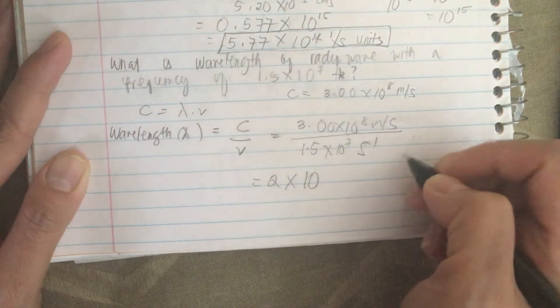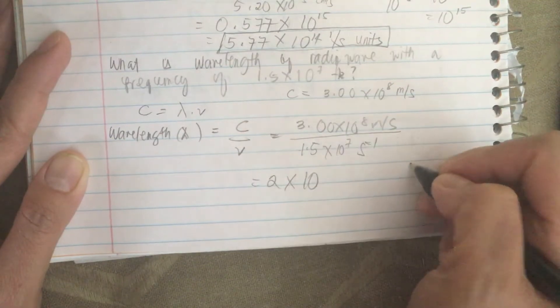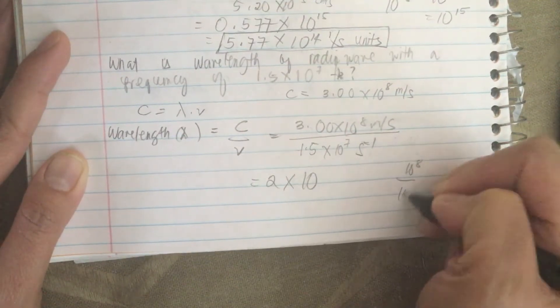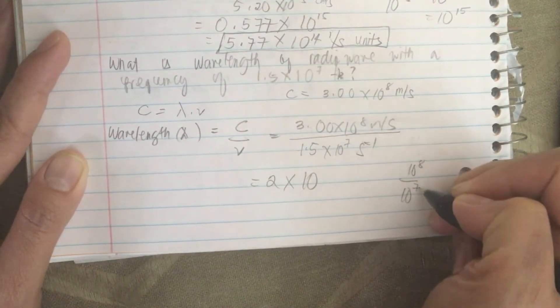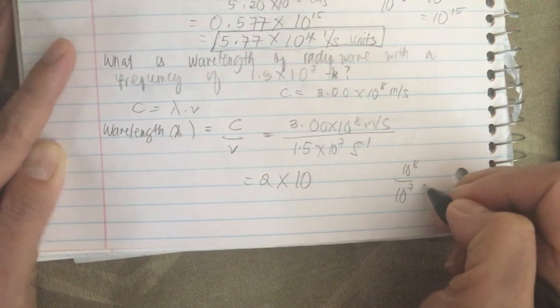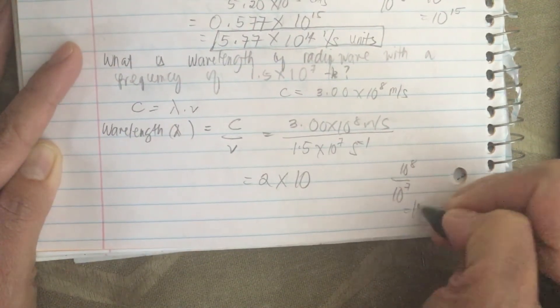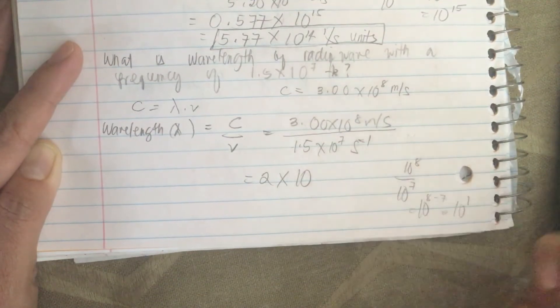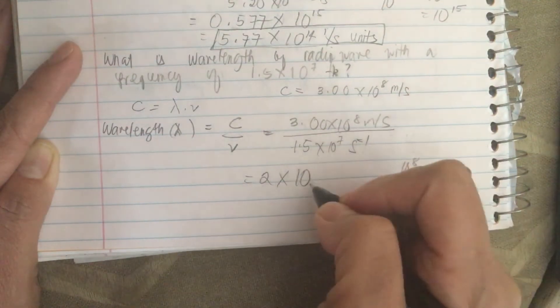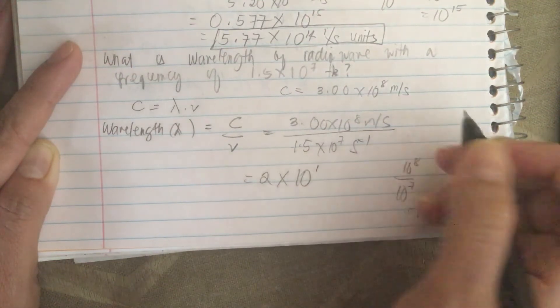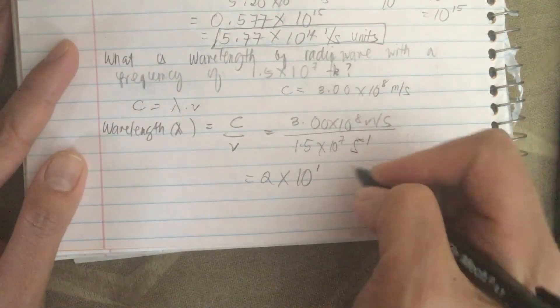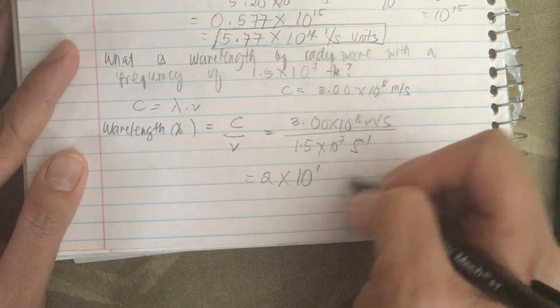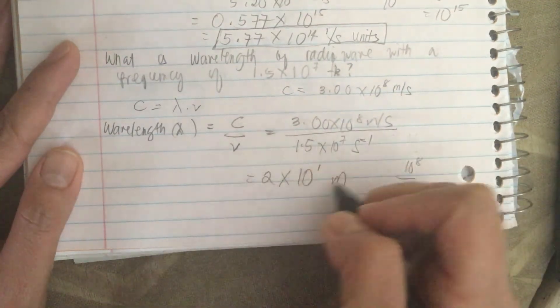We have 10 to the 8 over 10 to the 7, so this is equal to 10 to the 8 minus 7, or this is 10 to the first power. The seconds cancel, so just meters.